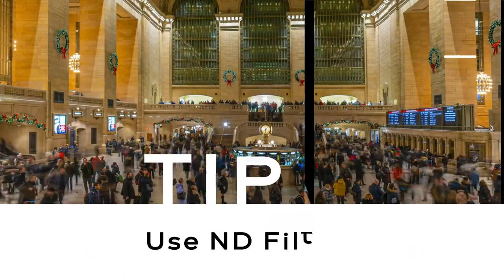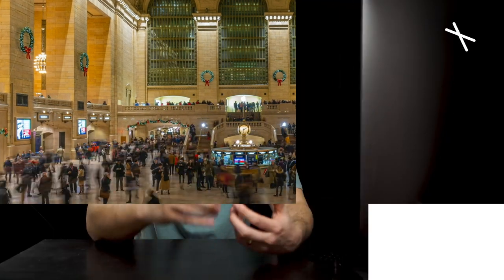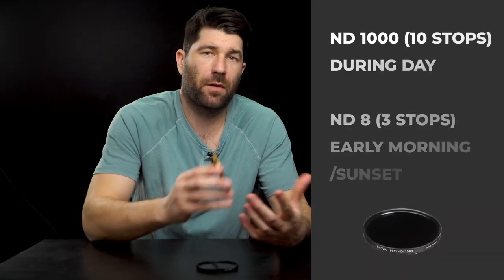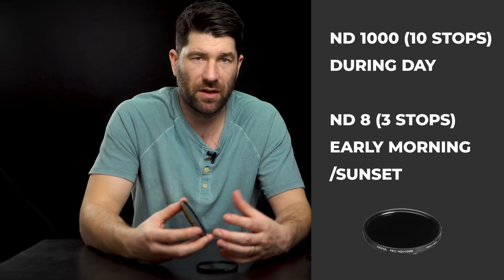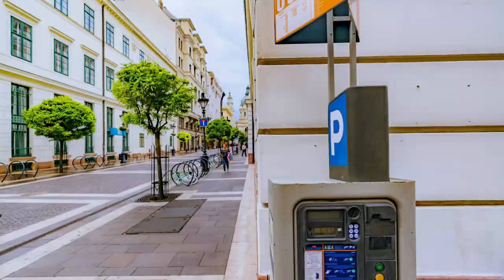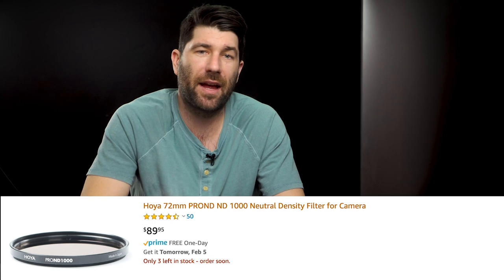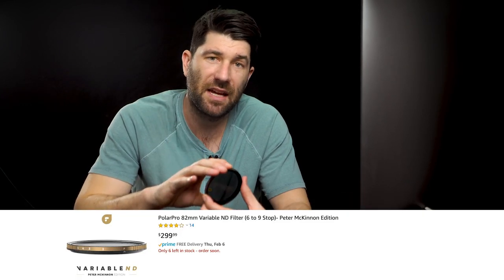Now you may be asking yourself: if we're supposed to be shooting wide open in the middle of the day, how are we going to do a long exposure? Which brings me to tip number six: get yourself some ND filters. ND filters, known as neutral density filters, are incredibly important. I have quite a few, from 10 stops all the way to four stops. If you plan on doing time-lapses during the day, I definitely recommend getting a 10-stop ND filter. Try to avoid cheap ND filters because they tend to have a color cast. I've used quite a few and really like Hoya ND filters, and more recently I've been using PolarPro ND filters, which have become my favorite.